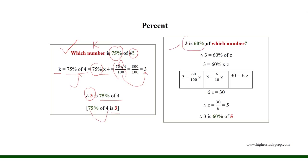3 is 60% of which number? Let the number be Z. Therefore, 3 equals 60% of Z, or 3 is equal to 60% times Z. As 60% equals 60 over 100, therefore 3 equals 60 over 100 times Z.